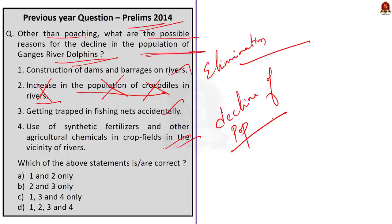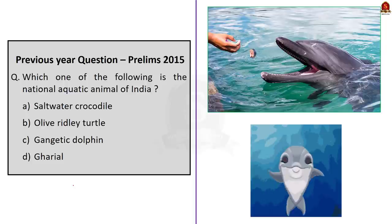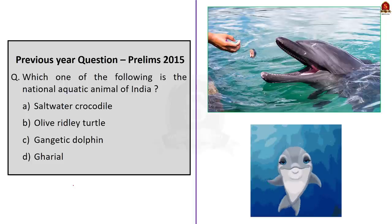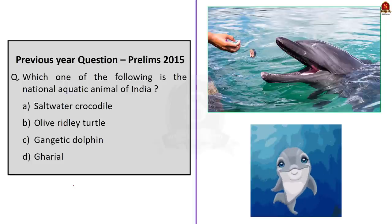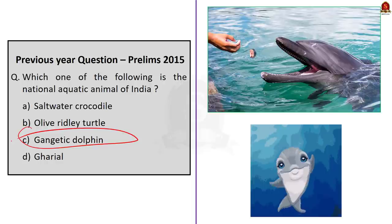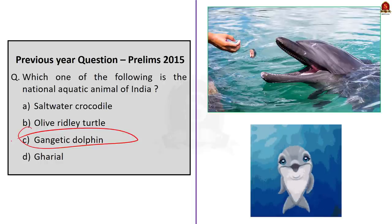The next question asks: which one of the following is the national aquatic animal of India? The answer is option C — the Gangetic Dolphin. It was declared the national aquatic animal of India by the Indian government.